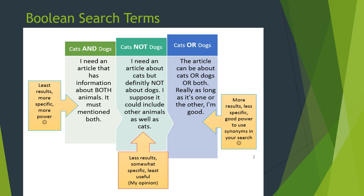Now I want to talk about Boolean search terms. You use these to communicate to databases. You have your main concepts, but how do you plug them in most efficiently? Let's start with AND. You use AND when you want to include both concepts — both cats and dogs must be in my resource. I don't want an article about just cats or cats and birds; it must be cats and dogs. AND is a great tool when you want fewer but more specific results. I'm telling the database exactly what I want right off the bat.